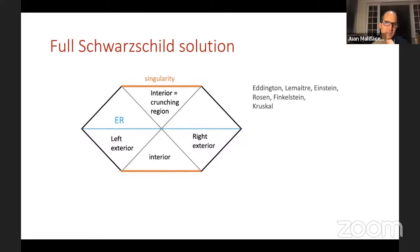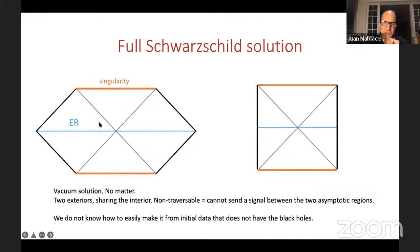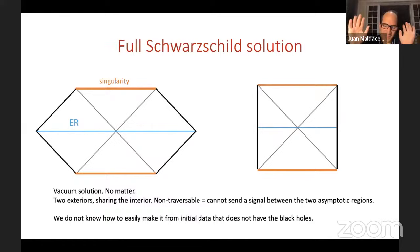It's a non-traversable wormhole: if you send a signal from the left side it will never make it out to the right side — it almost makes it, but will always be behind the horizon. This solution is mathematical; we don't know how to make it from simple non-singular initial data, and it doesn't arise through natural processes. Natural black holes we find in nature have a single interior with matter inside.